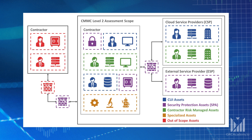The blue-colored items are CUI assets and are in scope. CUI assets process, store, or transmit CUI and are also authorized to hold both CUI and FCI. The purple-colored items are security protection assets and are also in scope. Security protection assets provide security protections for CUI assets.